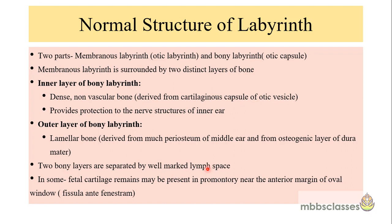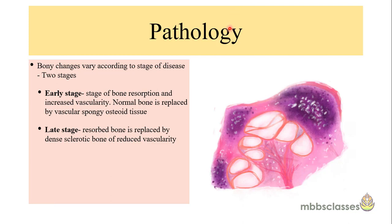The most common site for the otosclerotic focus is the area of the fissura ante fenestram, located at the anterior margin of the oval window where the stapes footplate is located. Looking at the pathology, the disease has two stages. In the early stage, bone resorption occurs along with replacement by a new vascular spongy osteoid tissue. In the late stage, the resorbed bone is replaced by dense sclerotic bone of reduced vascularity, which is the inactive stage.